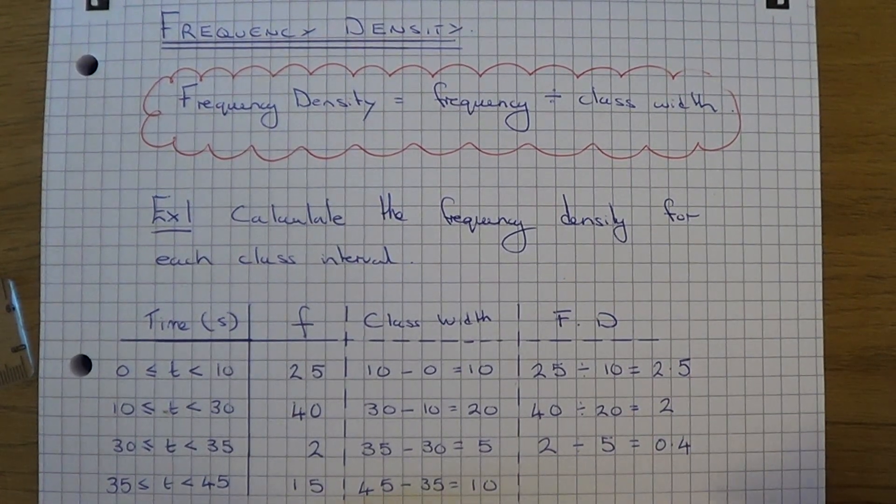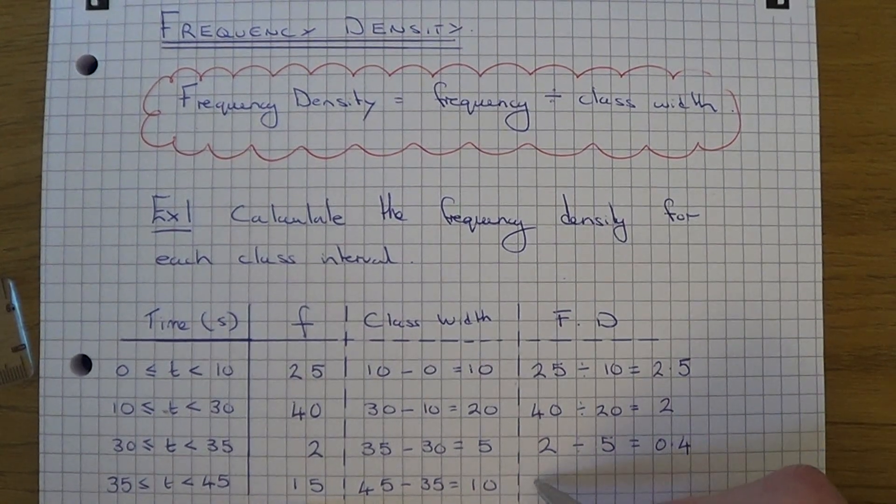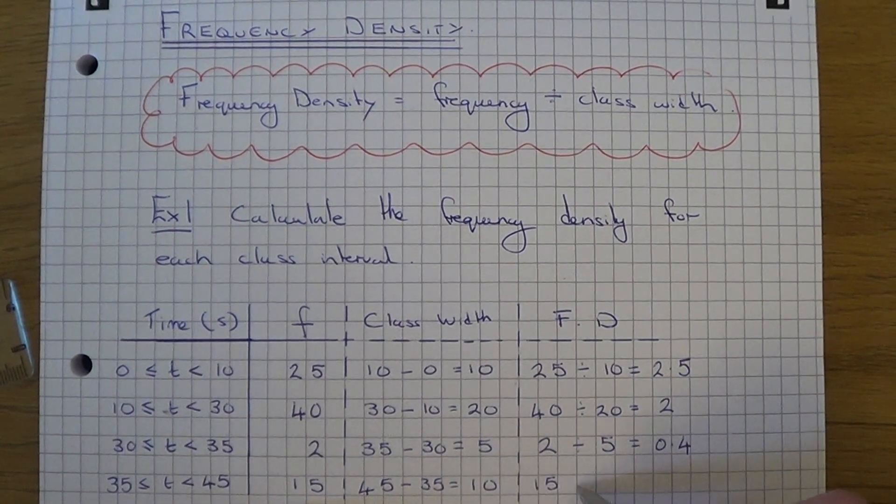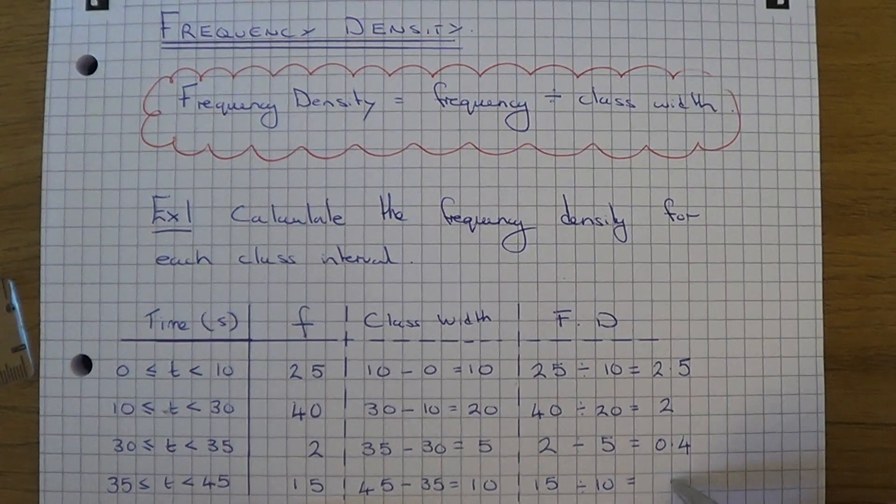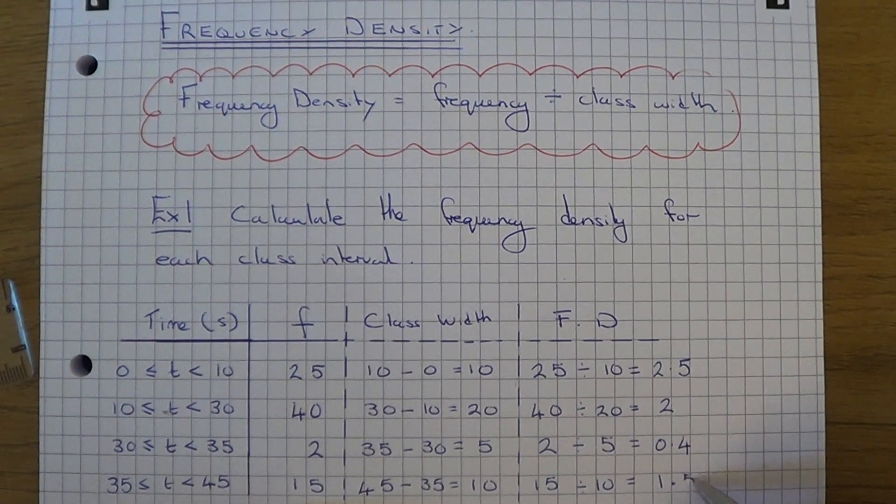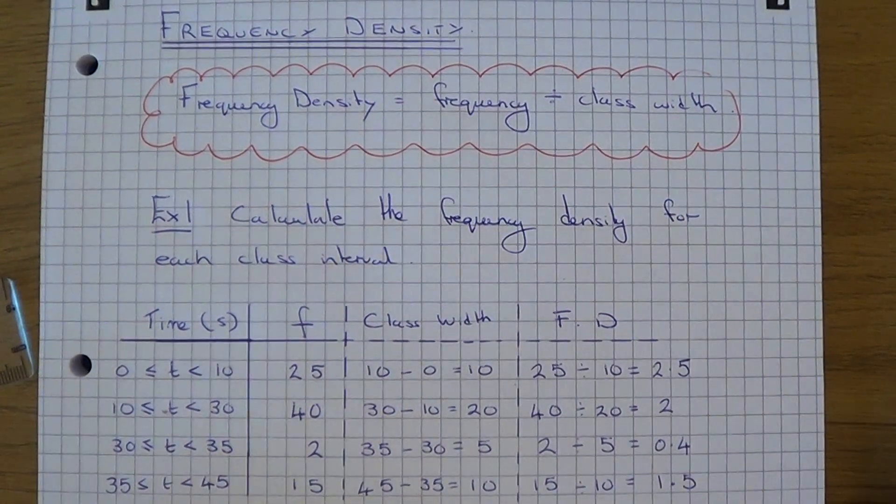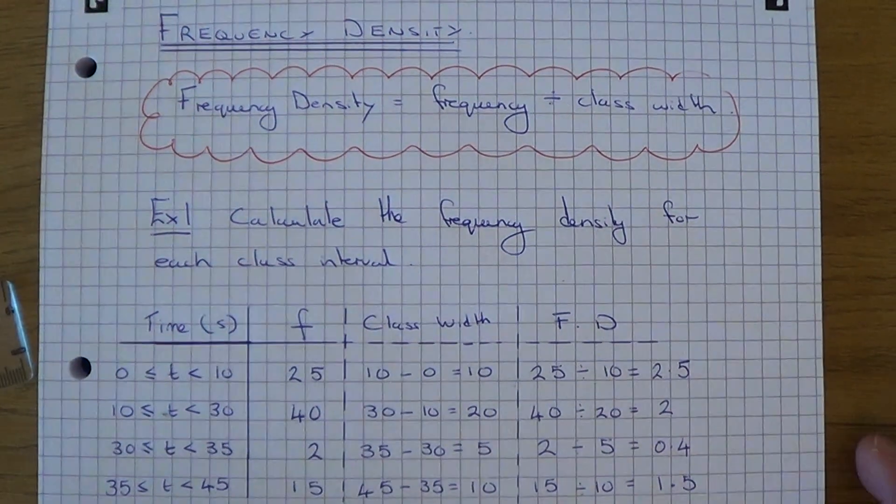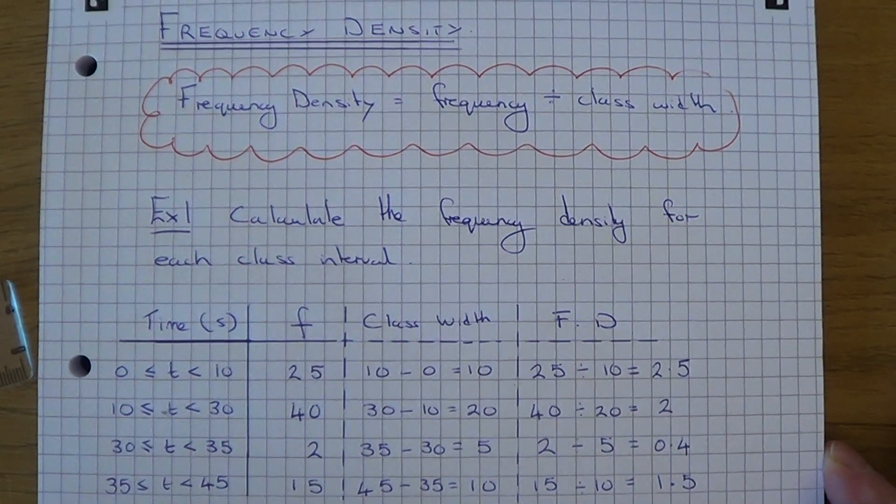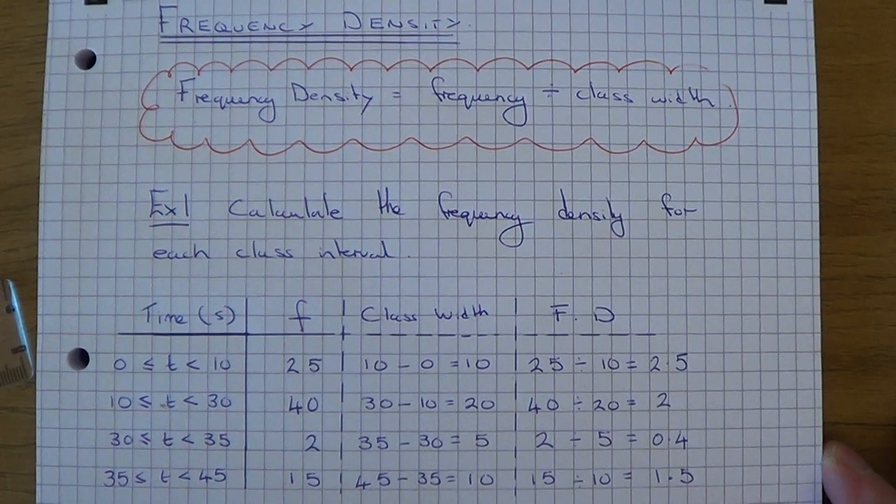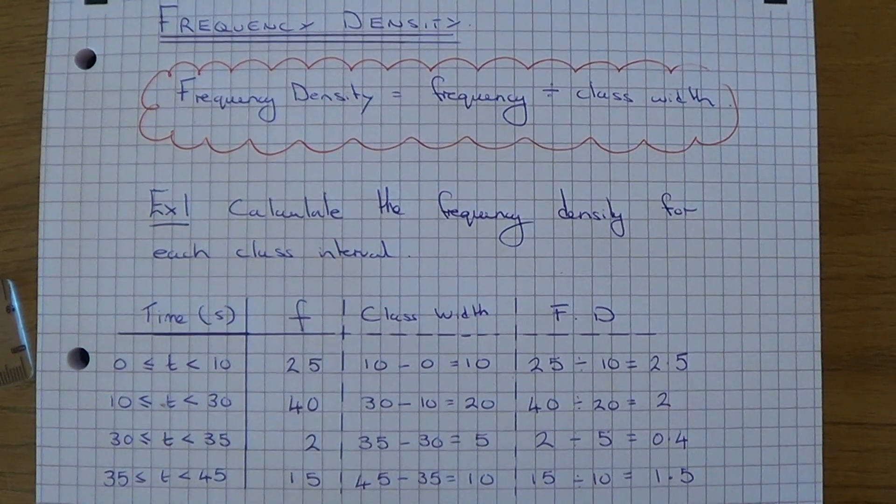For the final group, it's going to be 15 divided by 10, which is 1.5. And that's it, so once you have these, you can then go on to draw your histogram. I'll do this in a different video. Thanks for watching.